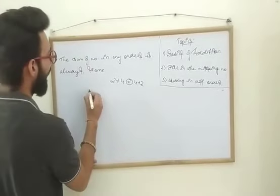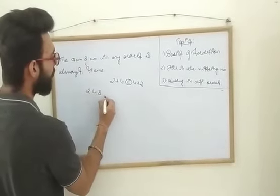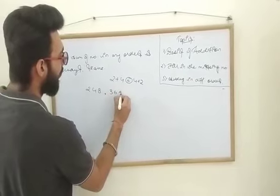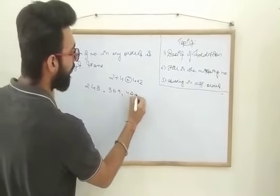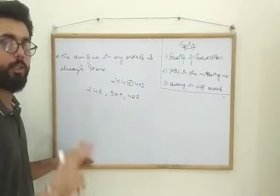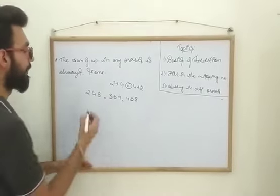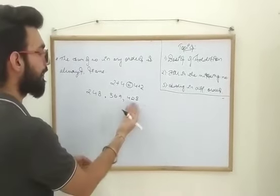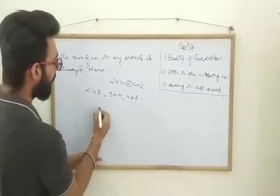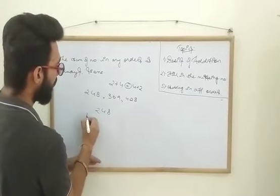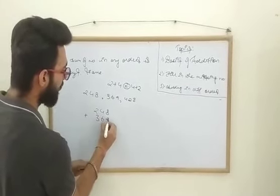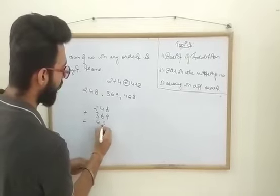Let's take numbers as 248, 369, and 428. We need to add these three numbers in two different orders. In first order we can directly arrange these numbers in the same order: 248 plus 369 plus 428.